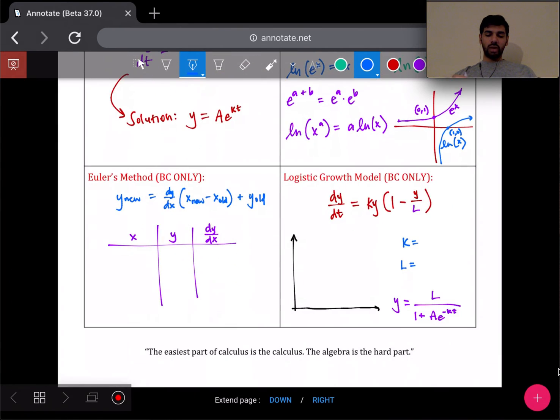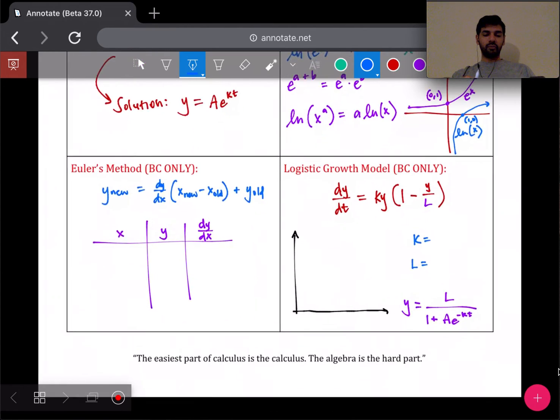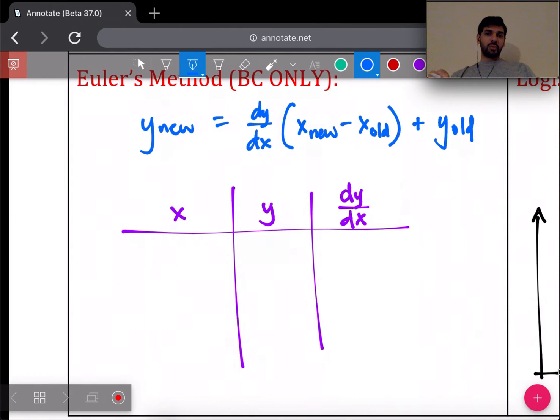At the bottom, these two topics are BC only topics. If you're taking the AB test, you don't need to worry about these two down here: Euler's method and logistic growth model. For Euler's method, the goal is you're trying to use one coordinate and a slope to get to another coordinate, or approximately another coordinate, on the graph of the original function. You're using multiple of these points to figure out where a future coordinate is going to be.